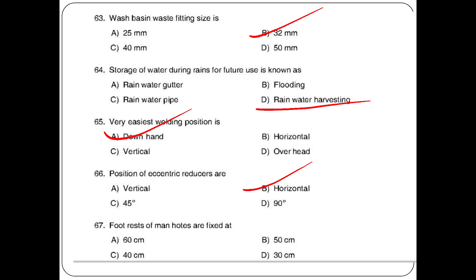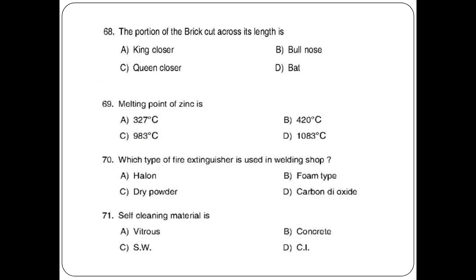Foot rests of manholes are fixed at 40 cm intervals. The portion of a brick cut across its length is called — options: king closer, bull nose, queen closer, bat. The answer is option D: bat. Melting point of zinc is 420 degrees Celsius. Which type of fire extinguisher is used in a welding shop? The answer is option D: carbon dioxide.